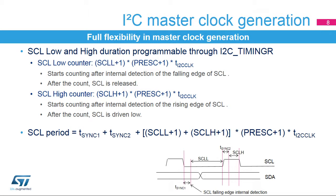The rising edge depends on pull-up resistor and SCL line capacitance. The falling edge depends on the I/O port parameters defined in the datasheet. In order to properly configure clock speed, these edges can be either measured or calculated. They are needed in order to properly configure the I2C peripheral in the STM32CubeMX tool. Then, the settings of the timing register can be automatically calculated by this tool.